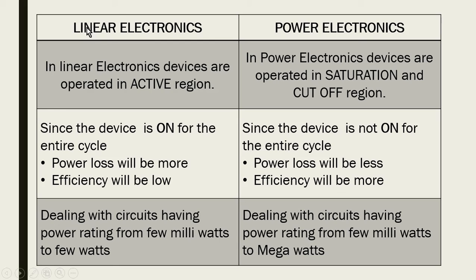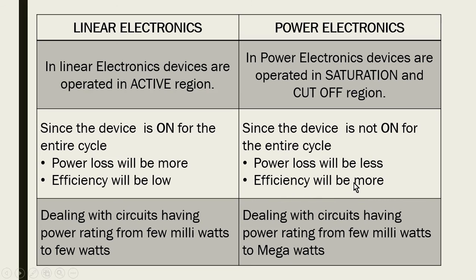To summarize: in linear electronics, devices are operated in the active region. Since the device is on for the entire cycle, power loss will be more and efficiency will be less, dealing with circuits having a power rating from a few milliwatts to a few watts. In power electronics, devices are operated in the saturation and cutoff region. Since the device is not on for the entire cycle, power loss will be less and efficiency will be more.